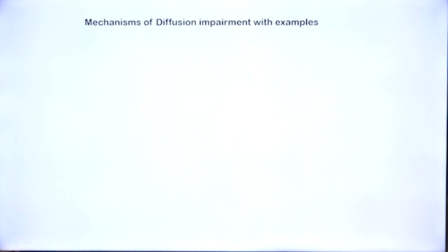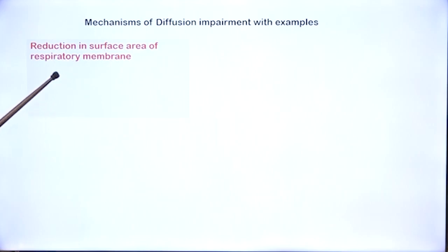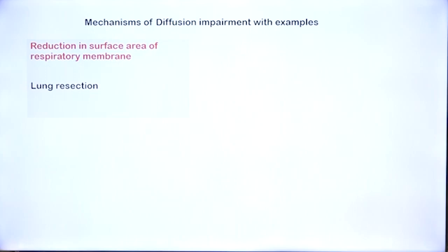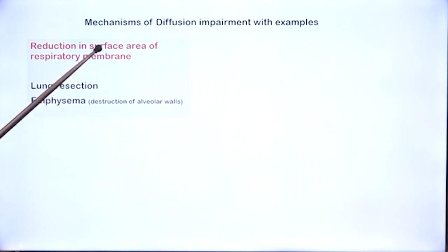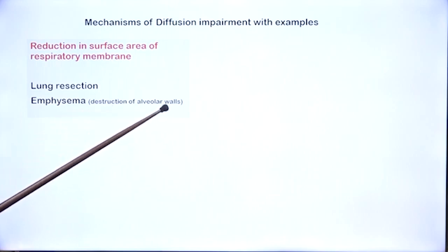Let us now look at mechanisms of diffusion impairment and some disease names. The conditions where there can be a reduction in surface area: the easiest to understand is lung resection, where due to some reason one lung or a section of the lung has been removed, for example due to a tumor. When a portion of the lung is resected, the surface area available for gas exchange would be less than normal, resulting in diffusion impairment. Another important example is emphysema, where there is destruction of the alveolar walls — we will see a cartoon in the next slide.